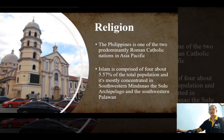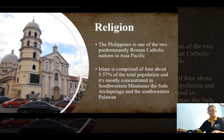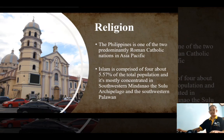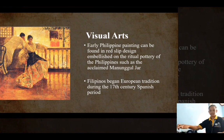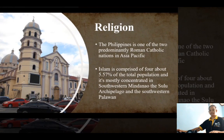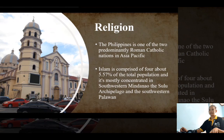The Philippines is one of the two predominantly Roman Catholic nations in Asia Pacific. From the census in 2014, Christianity consisted of about 90.07% of the population and is widespread throughout the nation. Islam comprises about 5.57% of the total population and is mostly concentrated in southwestern Mindanao, the Sulu Archipelago, and southwestern Palawan.